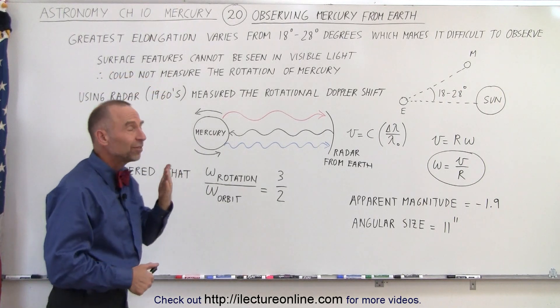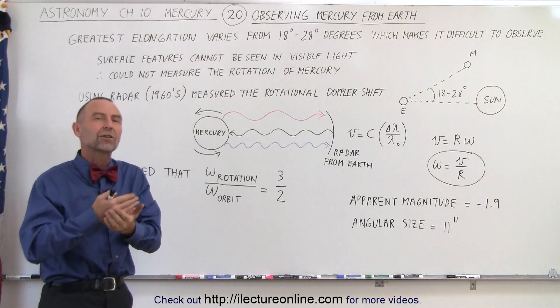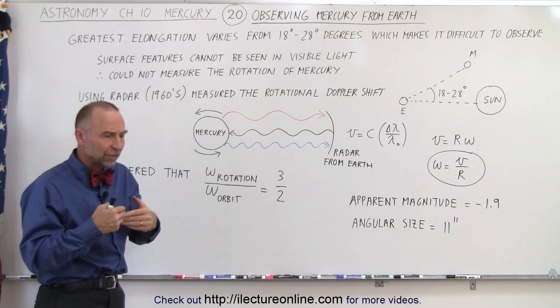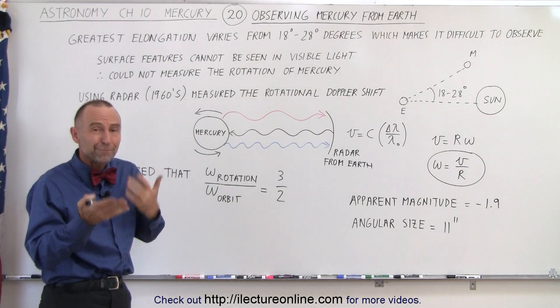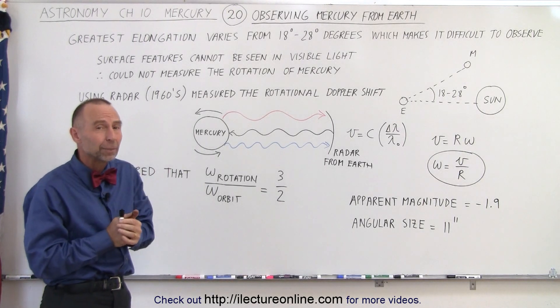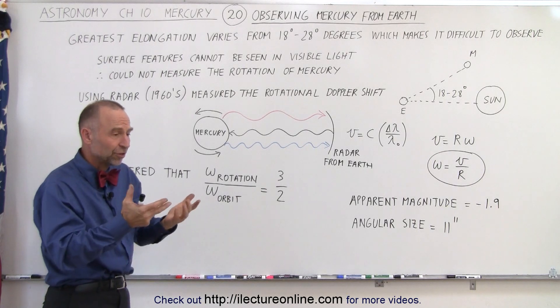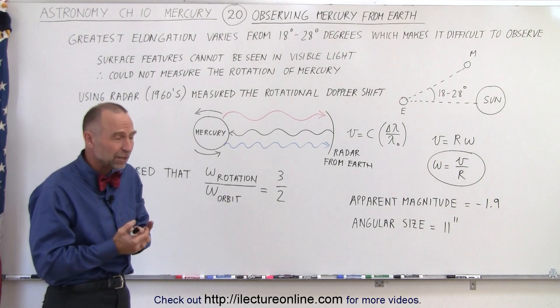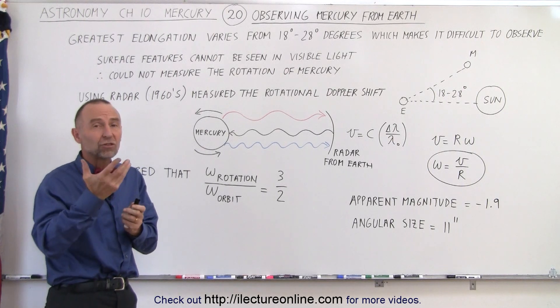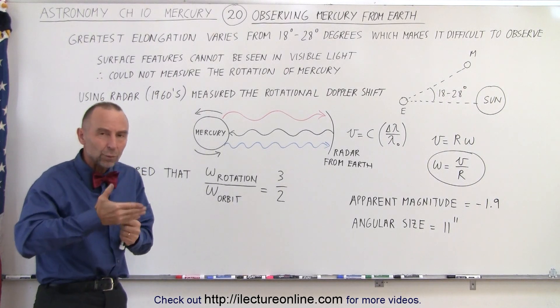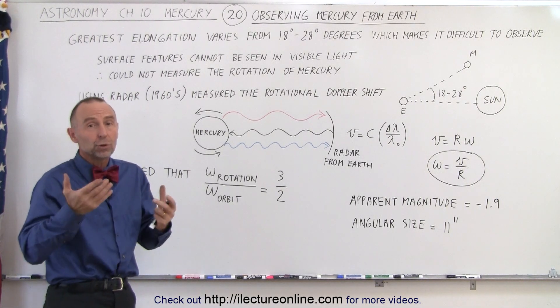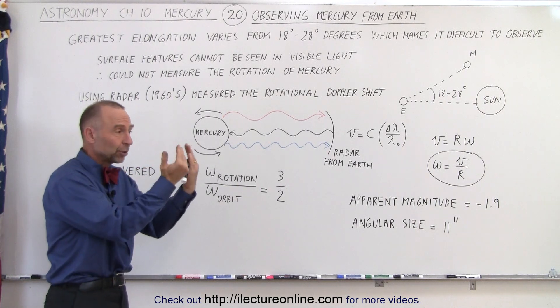the surface features cannot be seen in visible light through a telescope from the Earth, which made it extremely difficult to try and measure the rotational speed of the planet. You couldn't see the surface features, you can't see the rotational speed, so it was assumed that the rotational speed was in sync with the orbital speed just like for the Moon, so that the same side of Mercury was always facing the Sun,